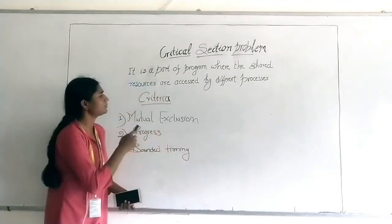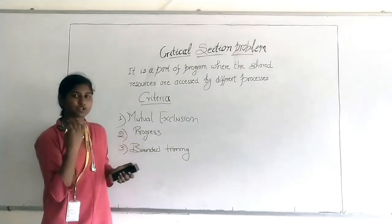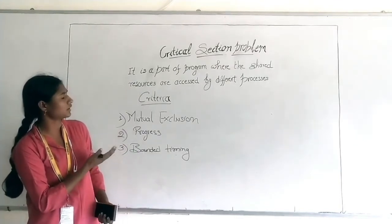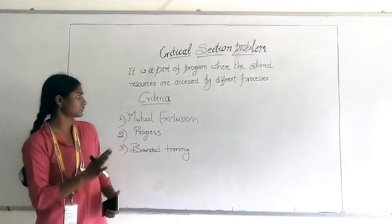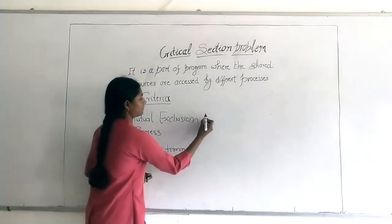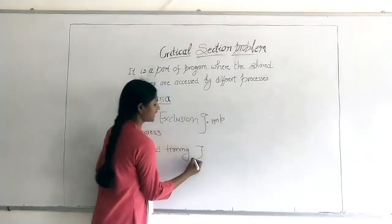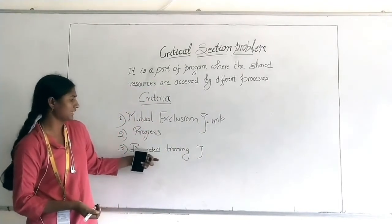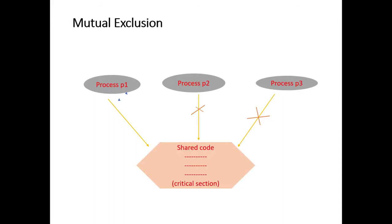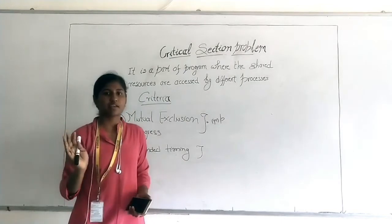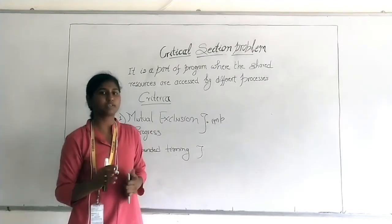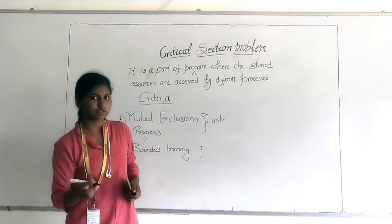To use the critical section correctly, we have to follow three criteria. The first is mutual exclusion. Mutual exclusion means that if many processes are given, every time only one process comes into the critical section, uses the resource, and gets out. Every process comes one at a time, not more than one. This is called mutual exclusion.